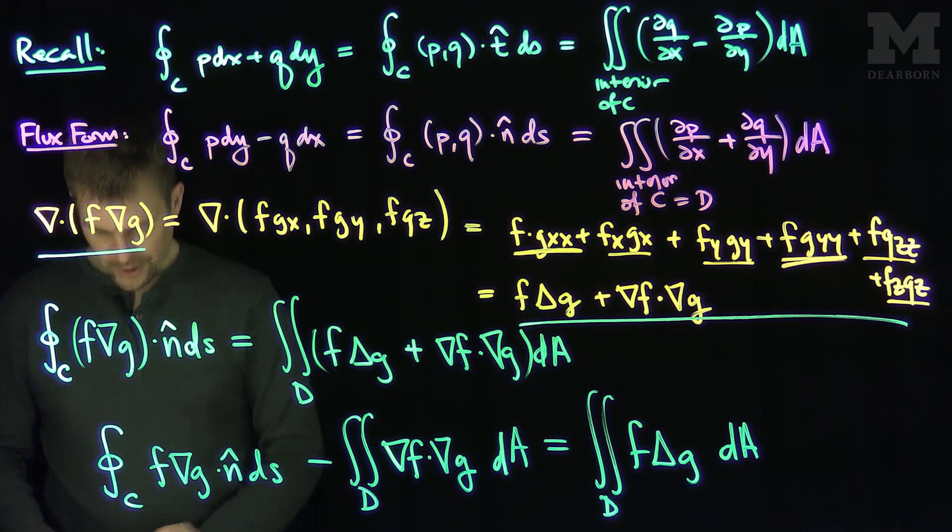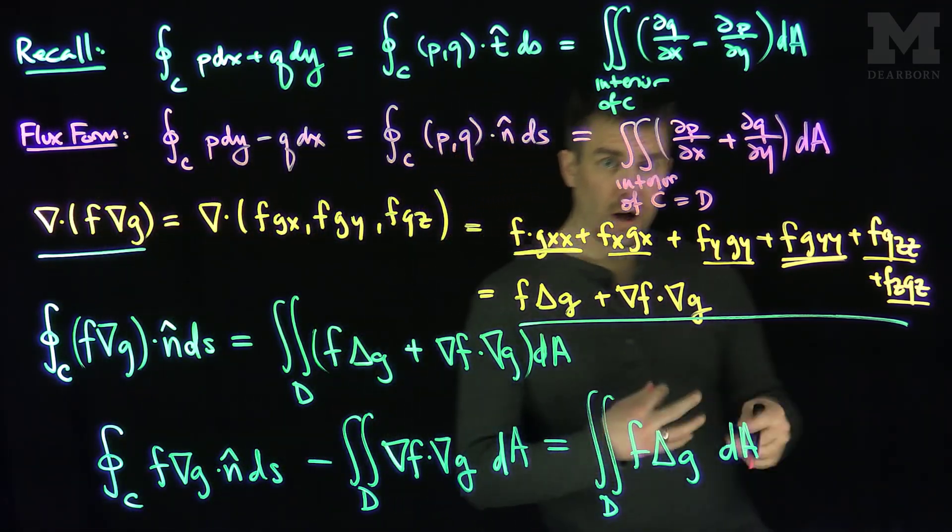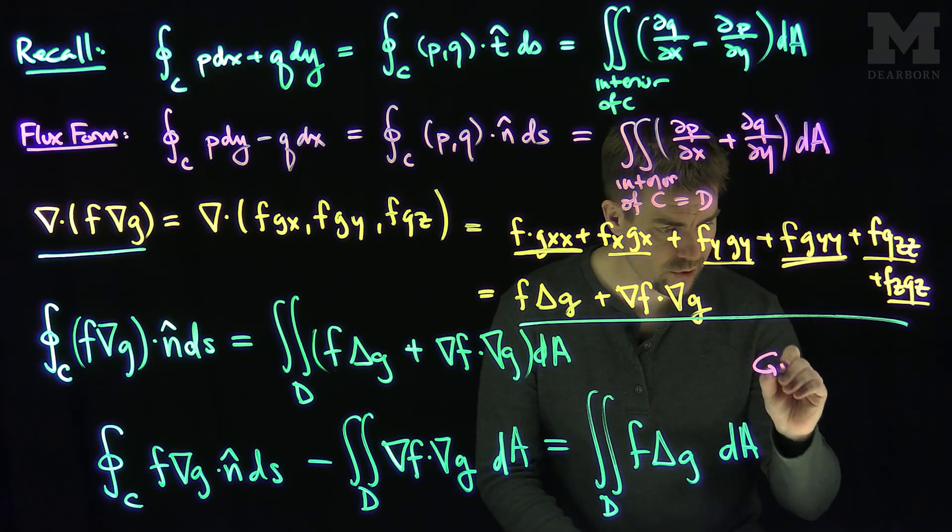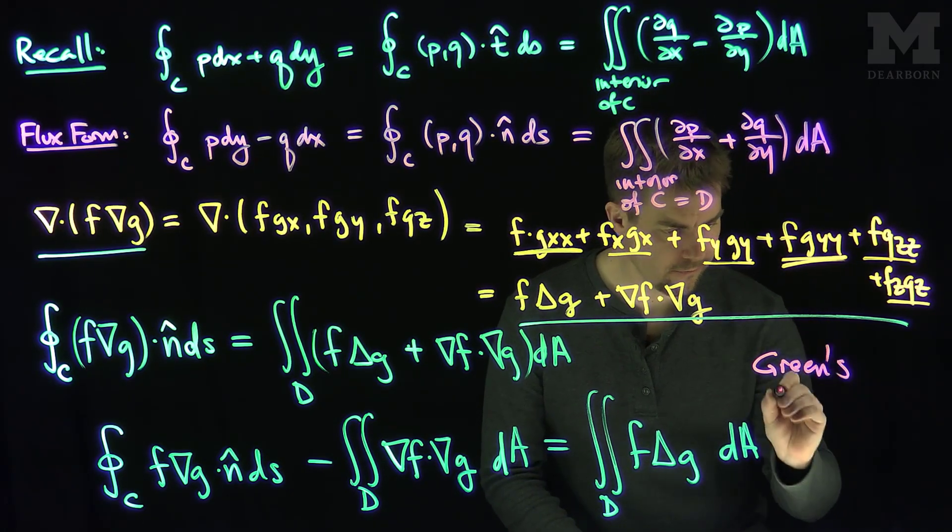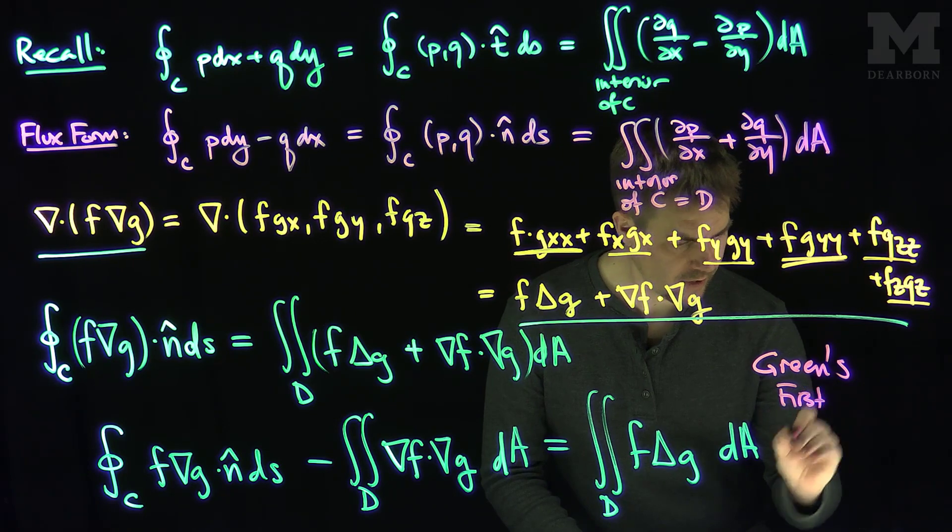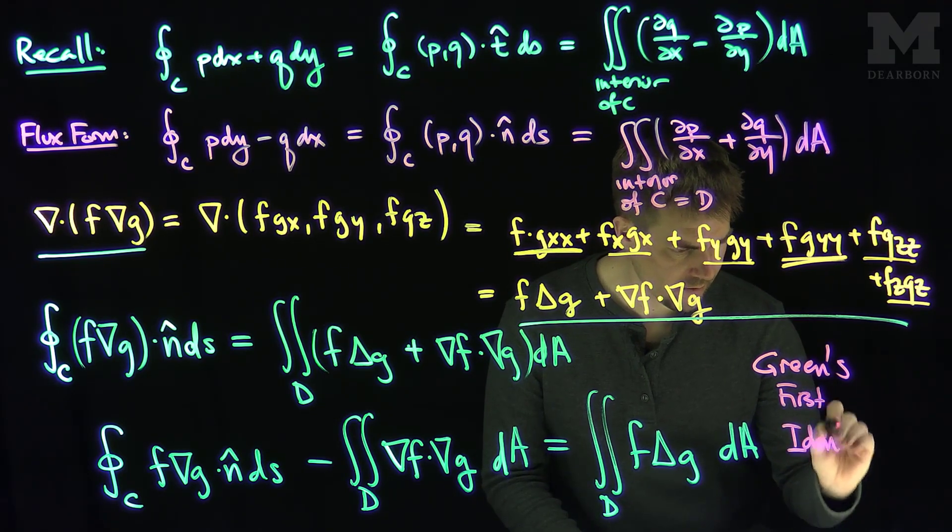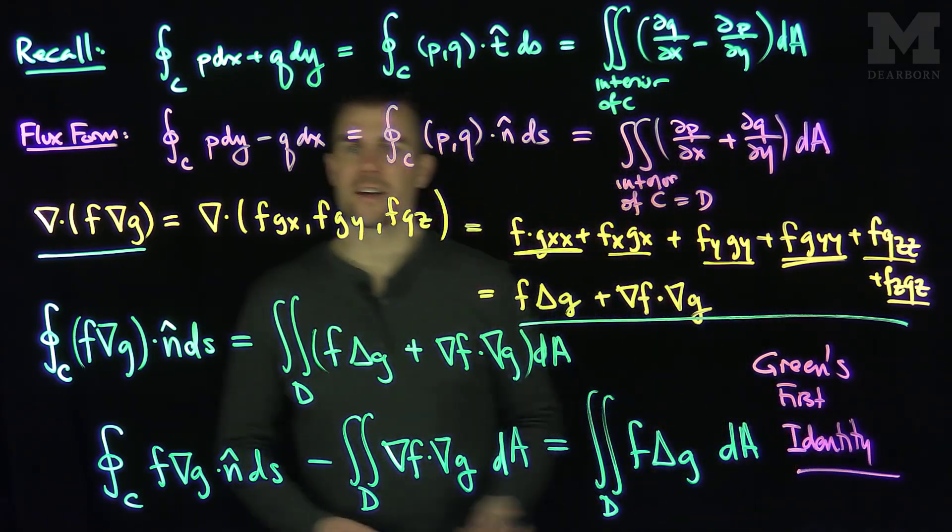And it turns out that Green's first identity is really an analog of integration by parts in two dimensions. Thank you very much.